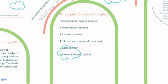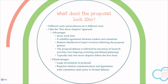So altogether, the six required areas of content include the statement of your research question, the rationale and justification of your project, a review of existing literature, an explanation of your theoretical conceptual framework, the methodology, and your research design and timeline.